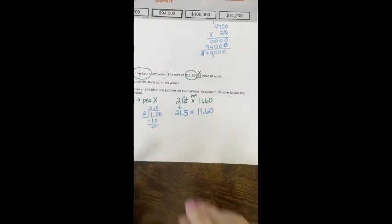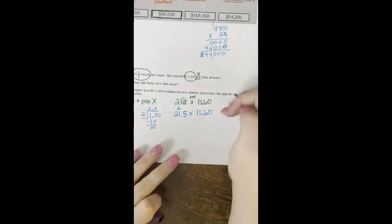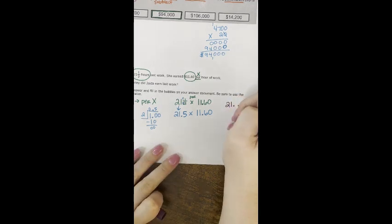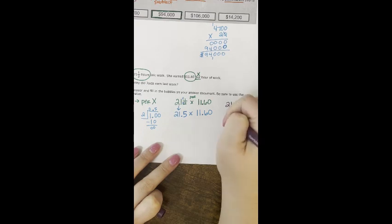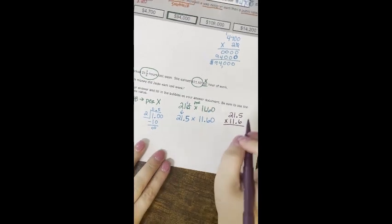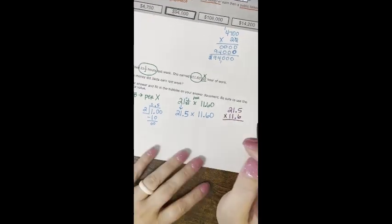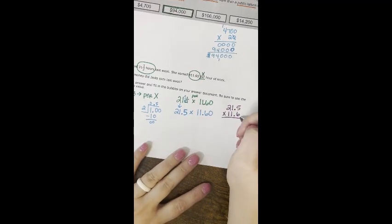So this is actually going to be 21.5. We kept the 21 and then point 5 is the one half. Now we can multiply by 11.6 or 11.60. I'm going to stack them and multiply, so I have 21.5 and I have 11.6. I don't have to line my decimals up but in this problem it actually worked out.